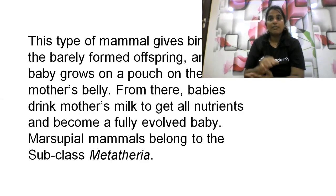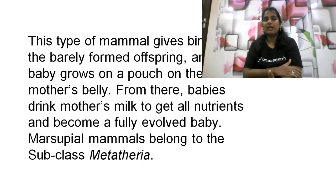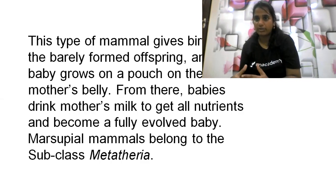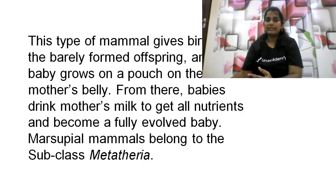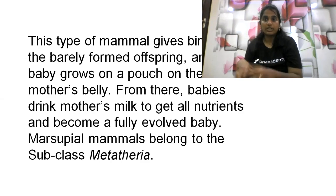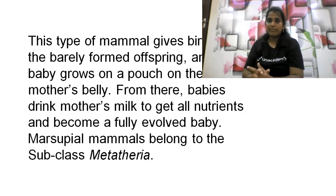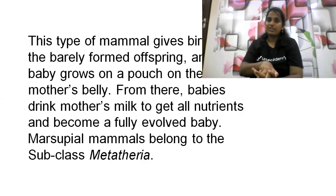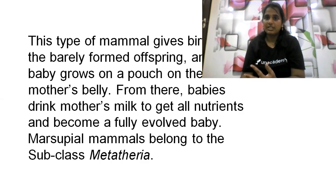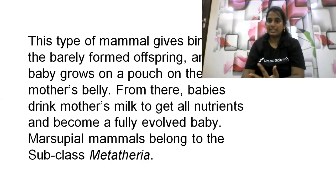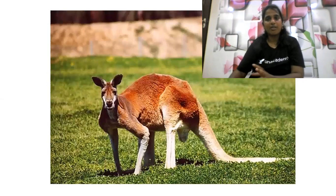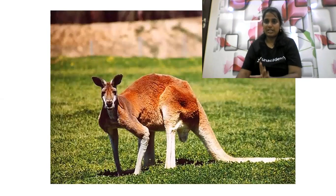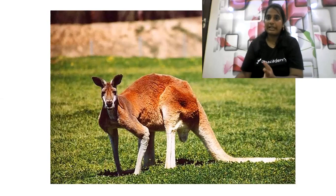For metatherians, it is pre-term birth. The completion of the term happens inside the mother's belly pouch. The baby receives mother's milk and gains its most essential nutrients there, and the baby develops fully in the pouch. So marsupial mammals are called metatheria, also known as pouched mammals. To summarize: prototherians are egg-laying mammals, metatherians are pouched mammals, and both are notably found in Australia.